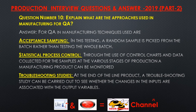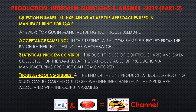Question number ten: Explain what are the approaches used in manufacturing for QA. Answer. For QA in manufacturing, techniques used are: acceptance sampling, where a random sample is picked from the batch rather than testing the whole batch; statistical process control, where control charts and data collected from samples at various stages of production are used to monitor a manufacturing product; and troubleshooting studies, where at the end of the production line a troubleshooting study can be carried out to see whether changes in inputs are associated with the output variables.